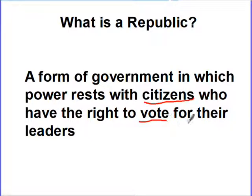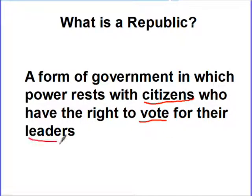The key here is that citizens have the right to vote for their leaders. This Roman Republic is very similar to the United States government, which is also a republic — the power is in the hands of the citizens, they vote for their leaders, and then their leaders make decisions for them. A republic is very similar to democracy, but the difference is instead of citizens voting on everything, they just vote to elect their leaders.